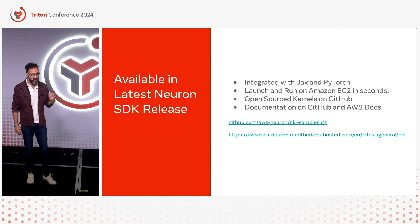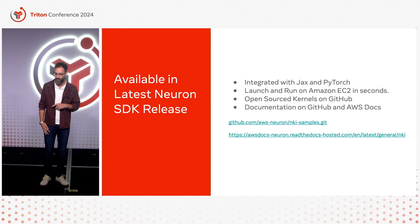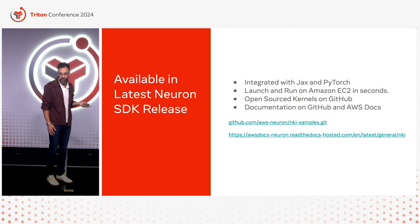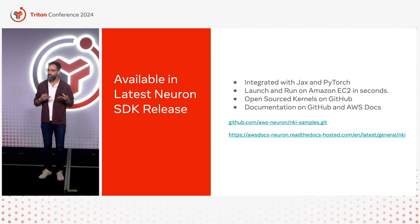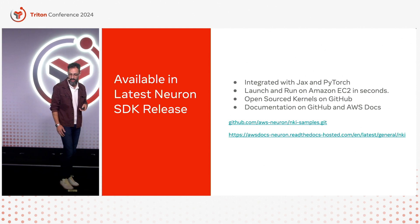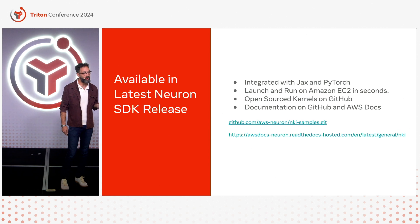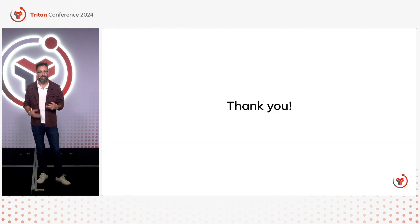This is available in the latest Neuron SDK release. It's integrated with JAX, PyTorch, and TensorFlow, and you can launch it and run it on Amazon EC2 in seconds. We've also open-sourced many of the kernels that we use internally in the Neuron compiler, which are being used in production models today on GitHub. We have documentation on GitHub and in the AWS docs as well. Please come join us, and let's see the ways we can innovate our deep learning models. Thank you.